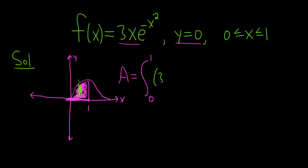So it would be 3xe^(-x²), and then technically minus 0, which is just the definite integral from 0 to 1, 3xe^(-x²) dx. So let's go ahead and grind this out by hand, and then I'll show you how to do it in the calculator.